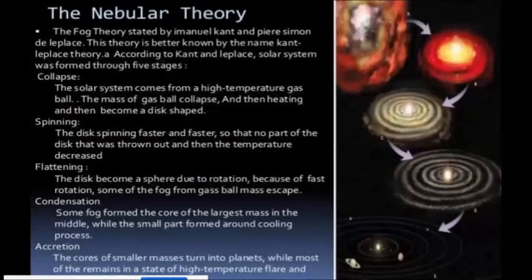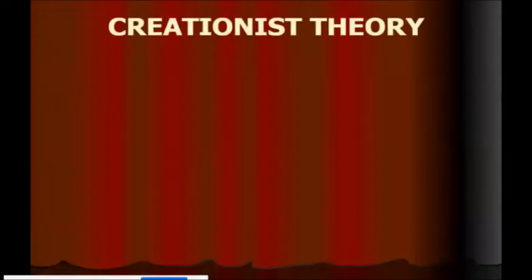The nebular theory step, here is the five stages, class. It started with collapse, and then spinning, and then flattening, and then condensation. And the last one is accretion, the core of the smaller masses remaining that is turning into a planet, while the most of the remain in the state of the high temperature, it's the sun. And another one, class, we have here, the creationist theory.